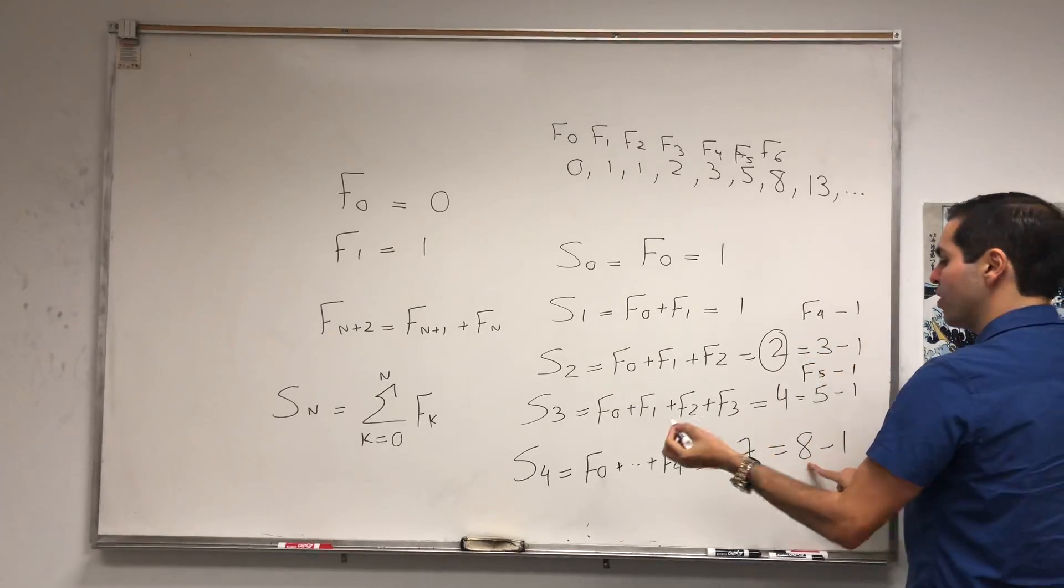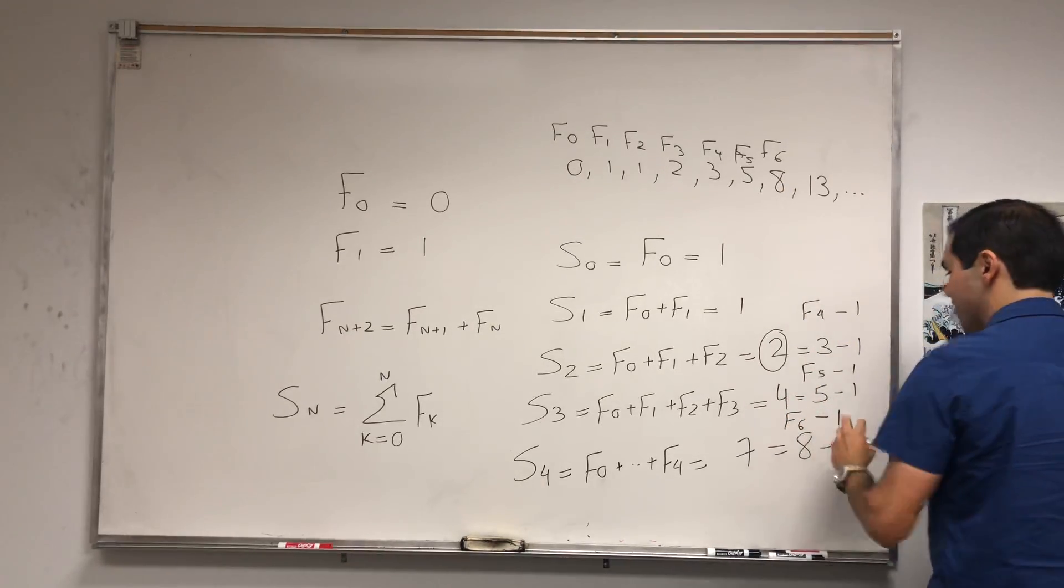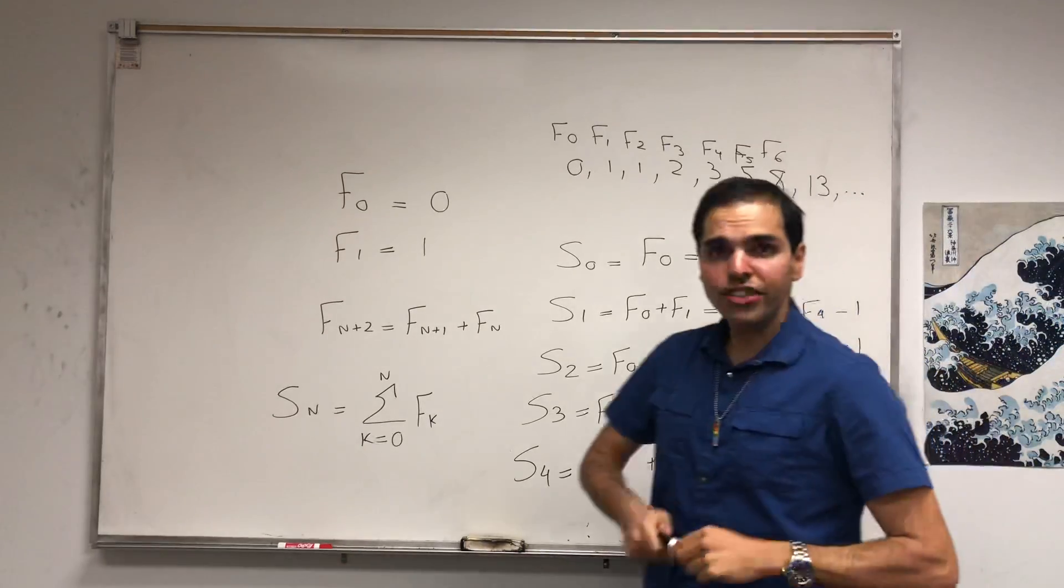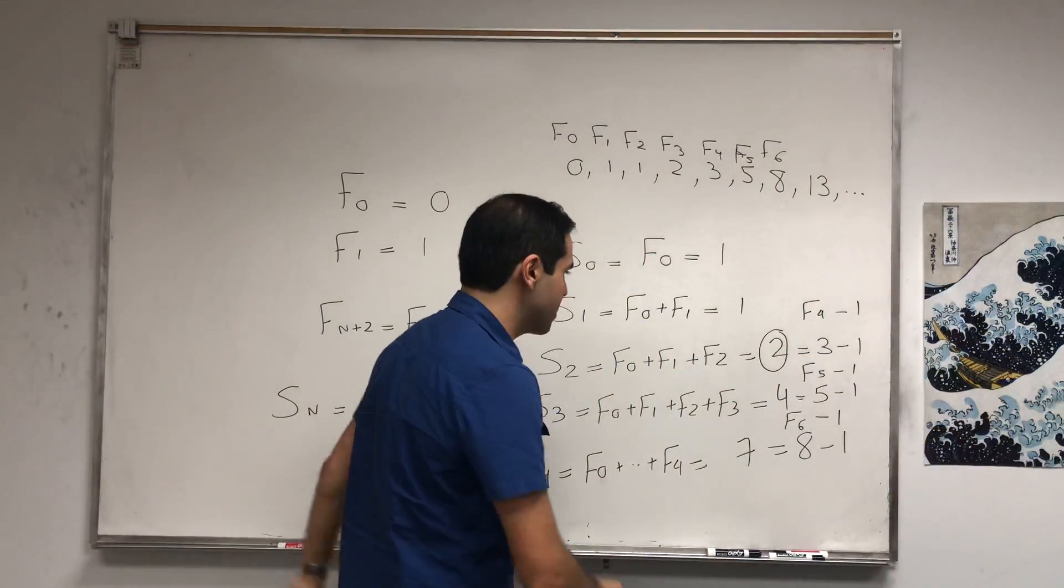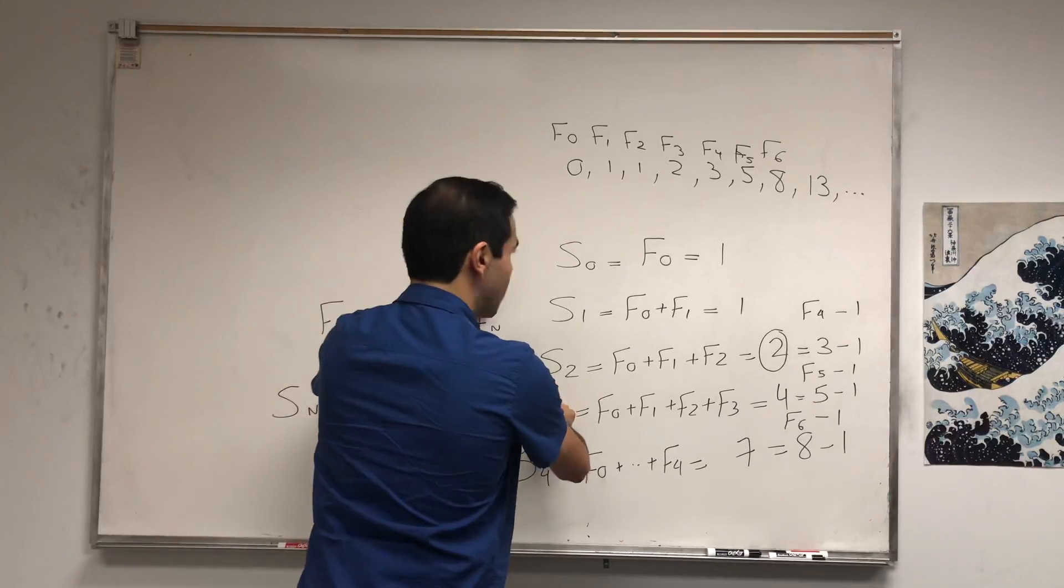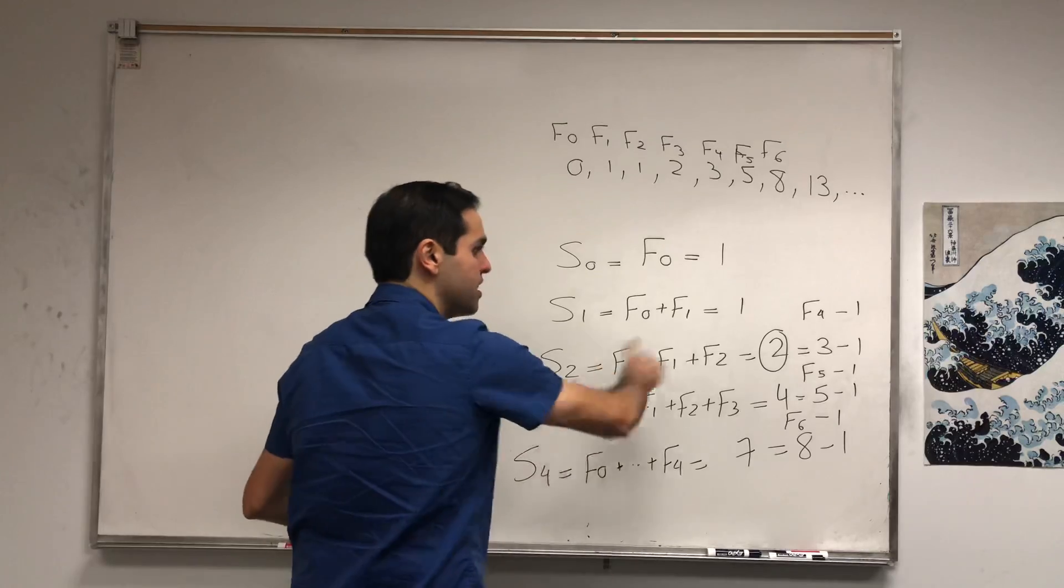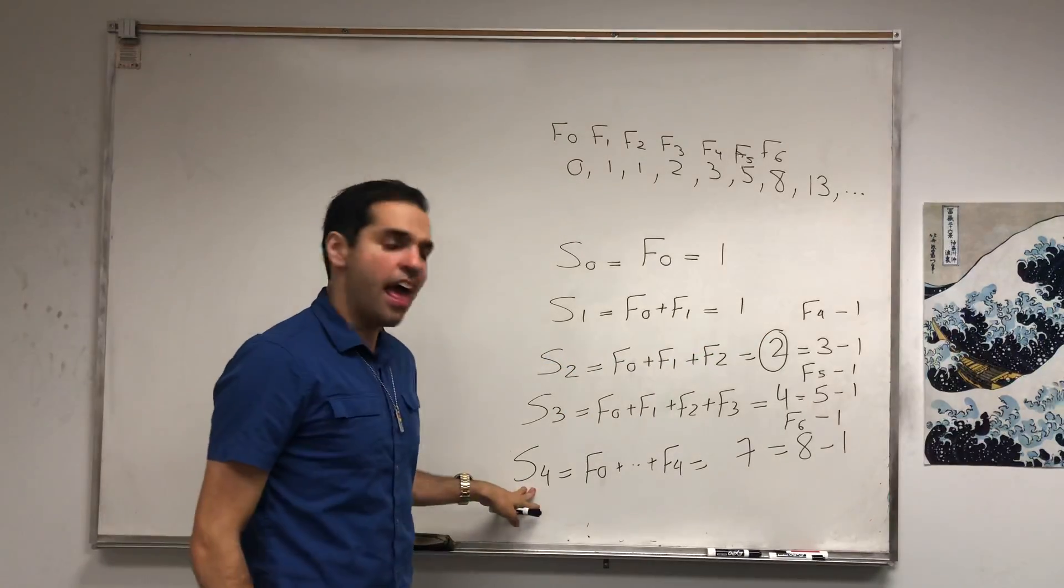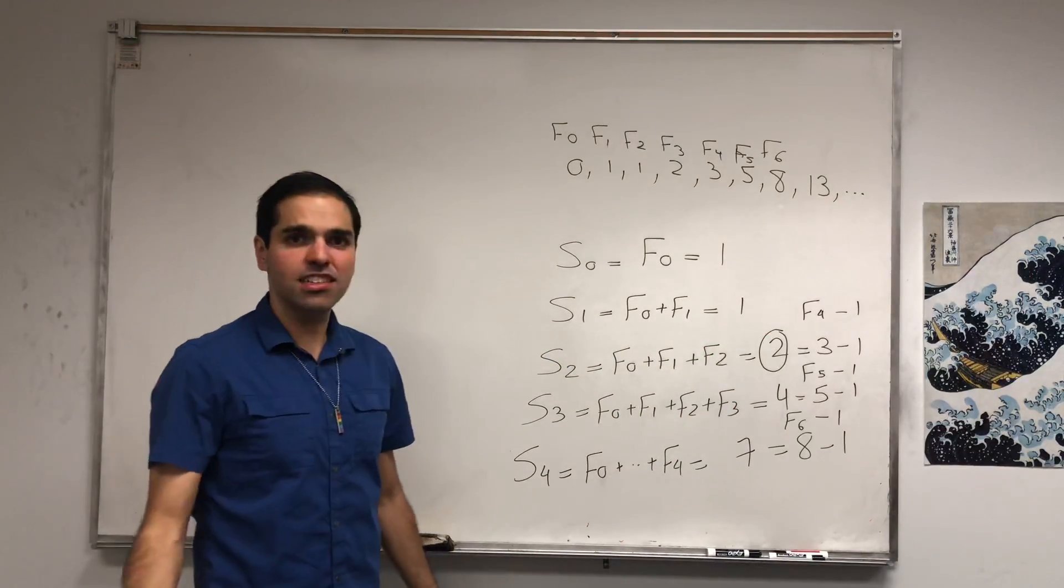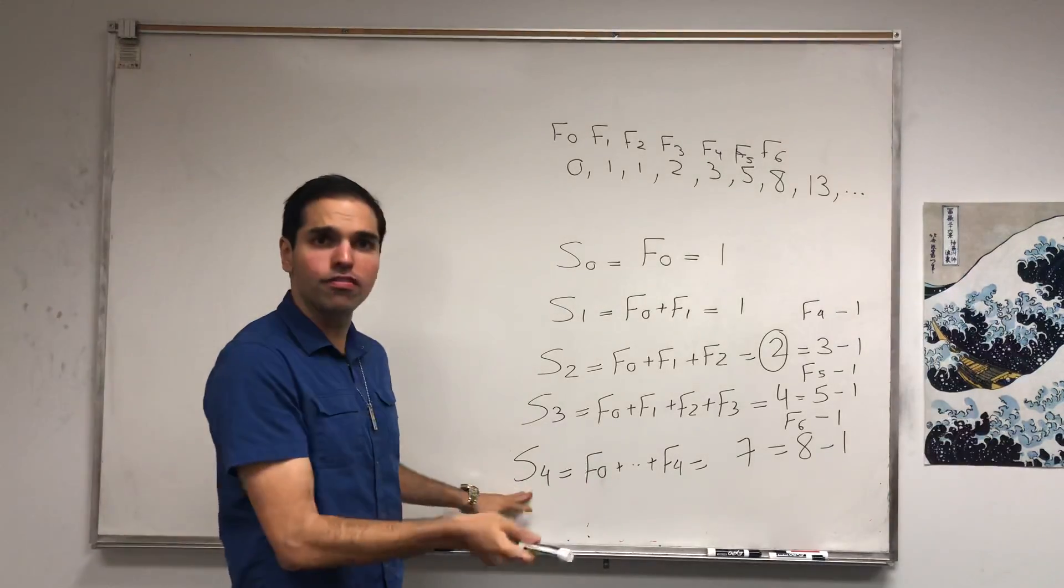Well, which one? 3 is F4, so F4 minus 1. 5 is F5, so F5 minus 1. So we actually get a very interesting explicit formula because look: S2, that's F4 minus 1; S3, that's F5 minus 1; S4, that's F6 minus 1.